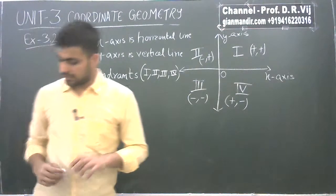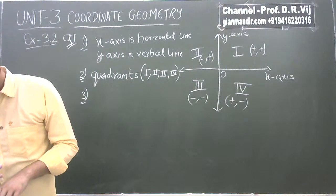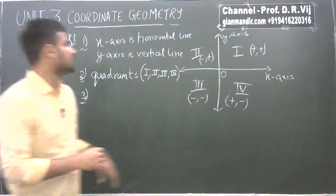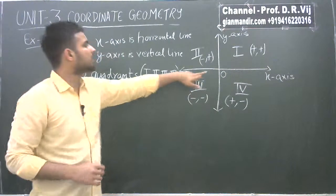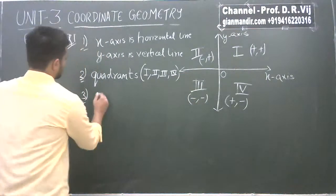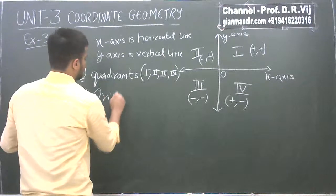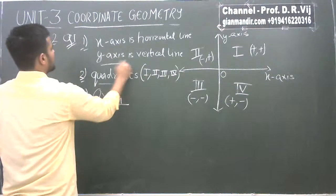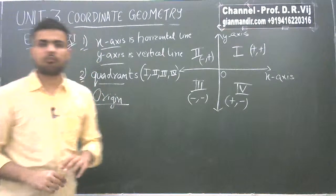Let's come to the third part now. Third part says: write the name of the point where these two lines intersect. The point at which they intersect is this O point, and it is known as the origin. This was question number one.